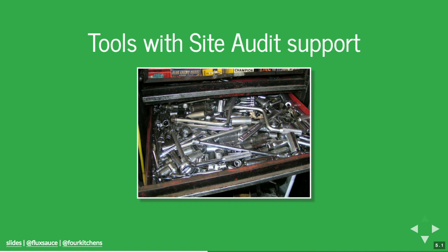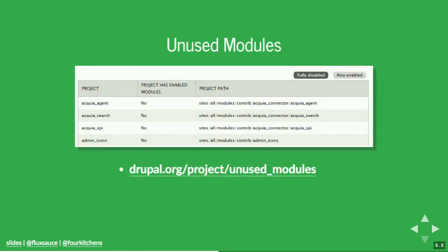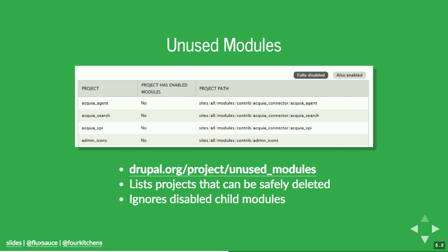There are a number of tools with Site Audit support — you can use them in conjunction with Site Audit or as standalone tools, both are completely valid options. Unused Modules is one example — it looks for modules that have been disabled or uninstalled that don't have any additional dependencies. For example, it won't give you a hard time about Views UI being off if Views is still active, because there's a required dependency. The nice thing is it can help reduce the size of your codebase, making build processes shorter or just making a single monolithic site easier to maintain.